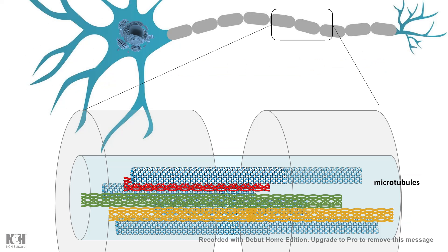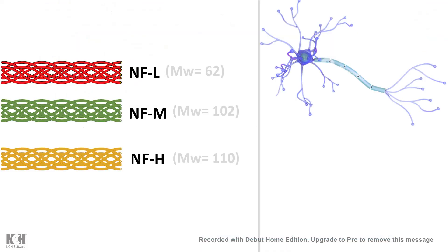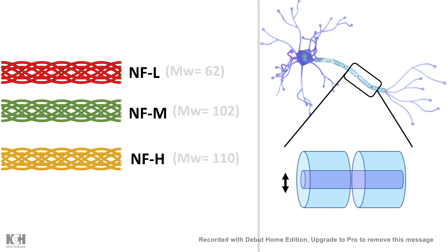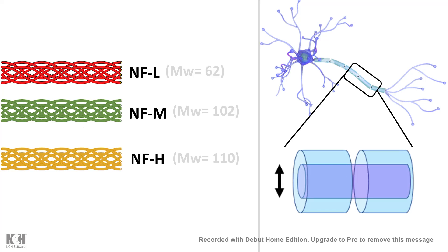The second class is the intermediate filaments present in neurons, known as neurofilaments, categorized as neurofilament L, M, and H — a nomenclature based on molecular weight: L for light, H for heavy. These neurofilaments inside the neuronal axon help in axonal radial growth. Since the diameter of the axon determines impulse conduction velocity, these neurofilaments have a broad spectrum role in neuronal electrophysiology.